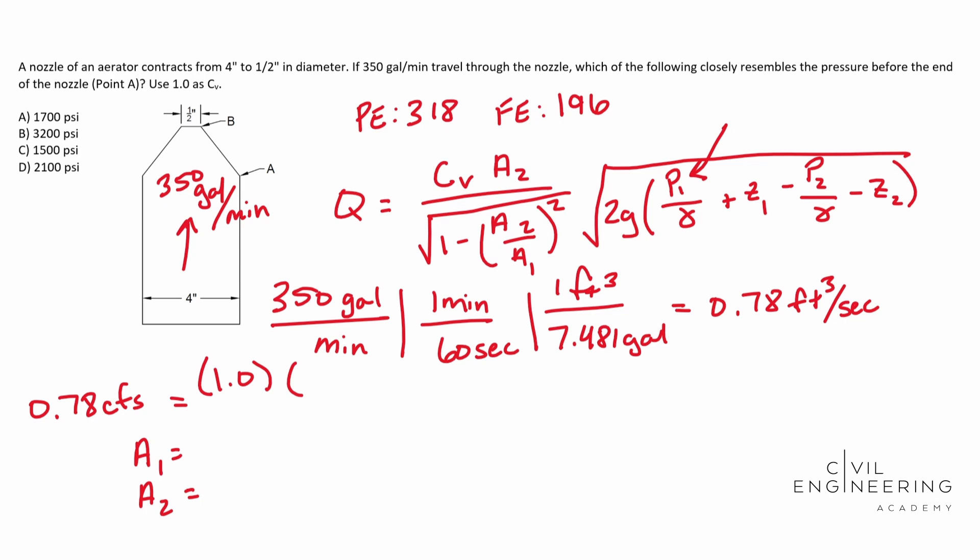So area one is point A. We're going to go ahead and call this one equal to point one. And this one's going to be equal to point two. So we're going to go pi times D, which at point one is going to be four inches. And we need to convert that over to feet. So divide that by 12 squared. And then we're going to need to put it over four. Pi d squared over four.